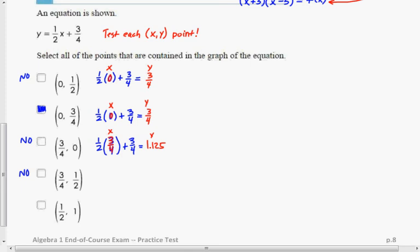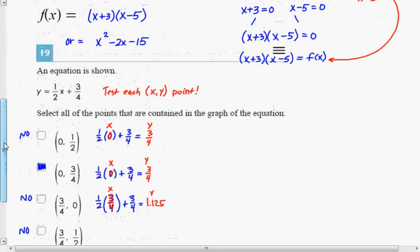So let's put 1 half in for x. 1 half times 1 half plus 3 fourths. 1 half times 1 half is 1 fourth. And 1 fourth plus 3 fourths is 1. So when x is 1 half, y equals 1. And so this one is a yes. So there are some samples for how you could approach numbers 18 and 19.